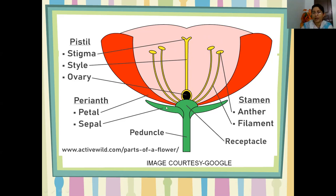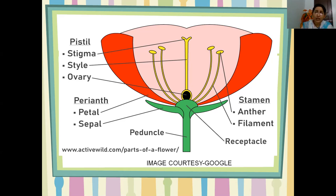Let me recapitulate the parts. The outermost whorl — sepals; the second whorl — petals; the third whorl — stamen, combinedly called androecium; and the innermost whorl — carpel, also called pistil or gynoecium. I hope you have understood all the concepts: why the flower is called the reproductive part, the parts and their importance, types of flowers, types of pollination, and pollinating agents.